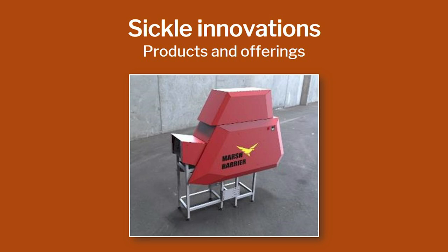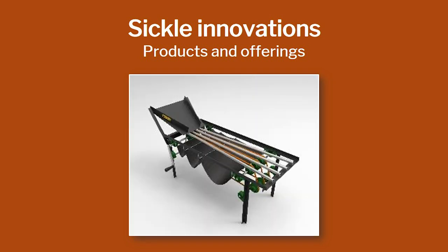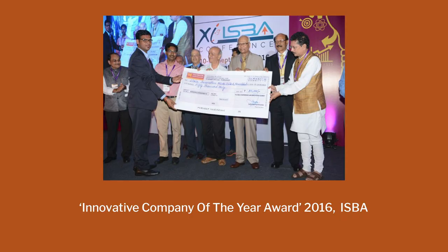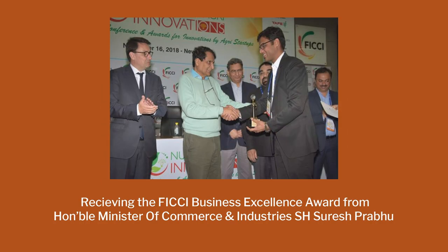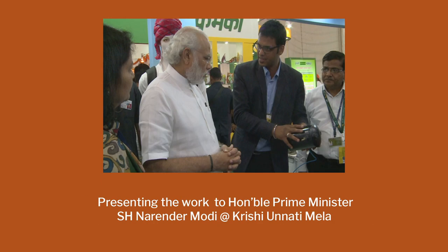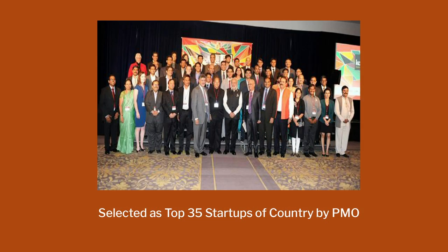These are some of the other products they have created — all kinds of picking devices. They use AI and machine learning to see whether the apple or mango is ready for picking. They have a camera and a wire cutter that can be heated. That is the ISBA innovative company award 2018, then PharmaTech startup 2018, then FIKI business award — that is Modi there, picking Nitin as one of the top 35 startups.